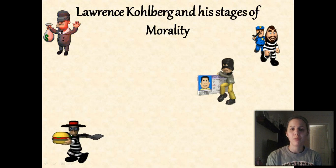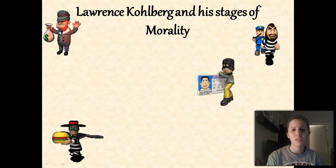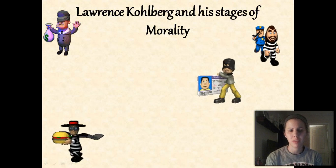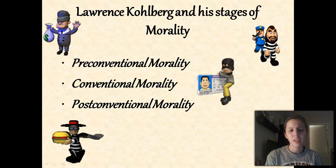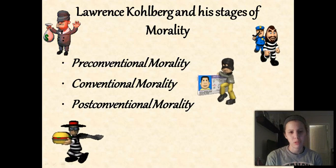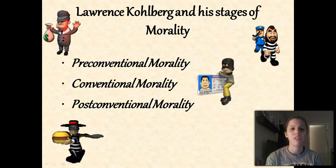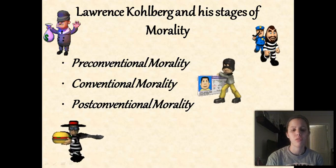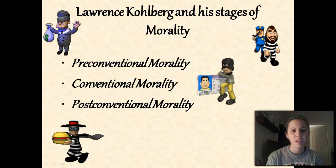Kohlberg has three stages of moral development that we each go through, and they are pre-conventional, conventional, and post-conventional. In this video we're going to go through each one of them.